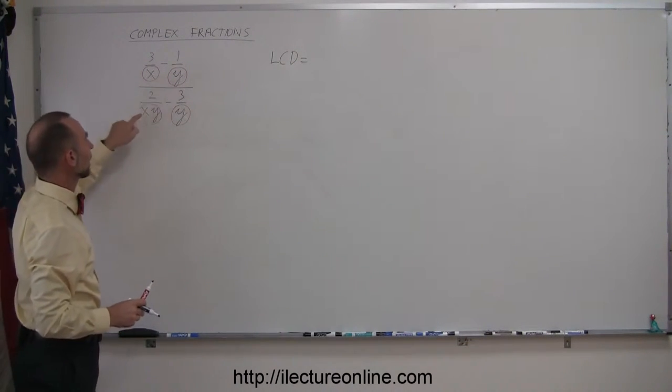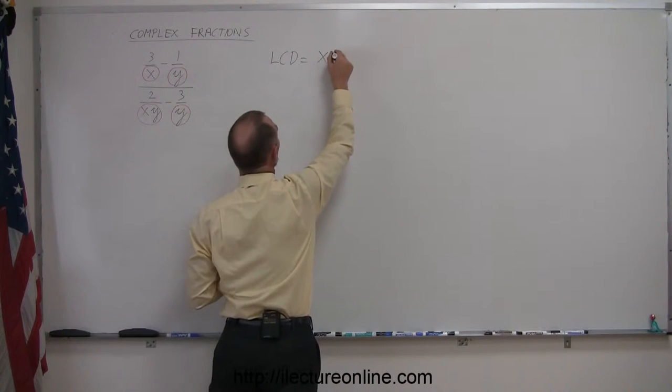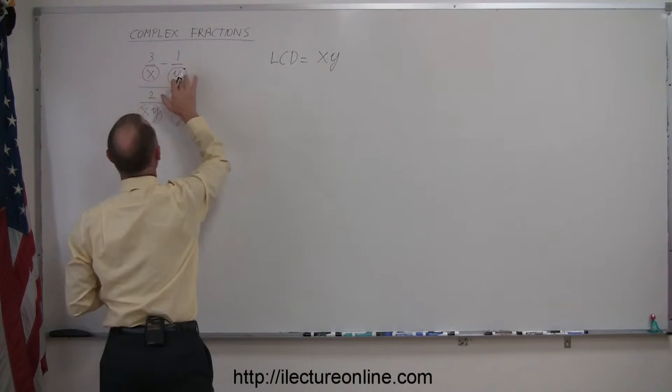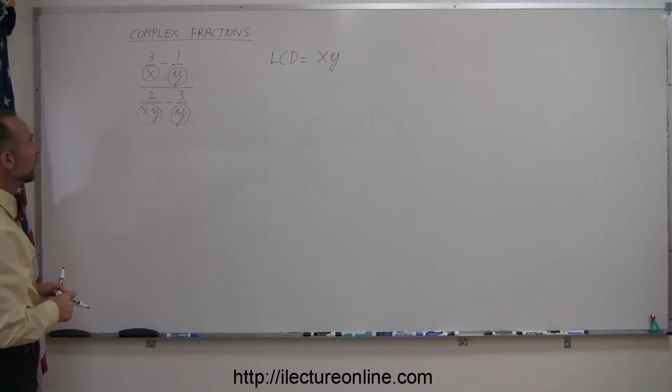Well, we have an x and a y and an x times y, so x times y wins out. Notice that in each case, each denominator fits evenly into that denominator, so x times y is the lowest common denominator,